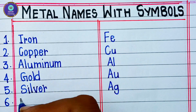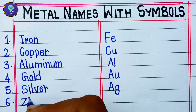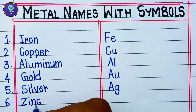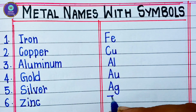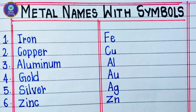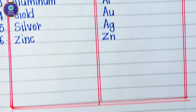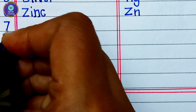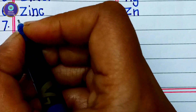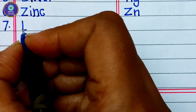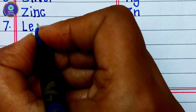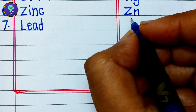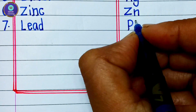Sixth one is zinc — Z, I, N, C — zinc, and the chemical symbol is Zn. Seventh one is lead — L, E, A, D — lead, and the symbol is Pb.